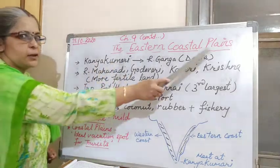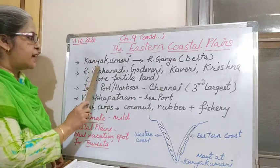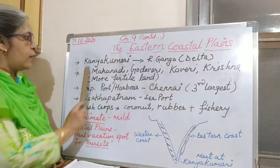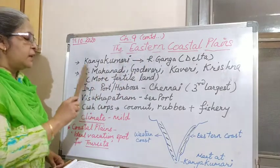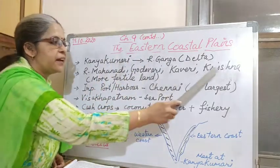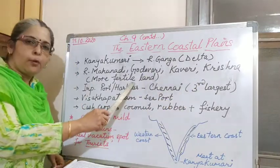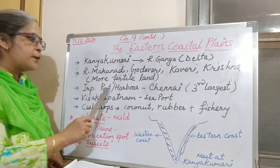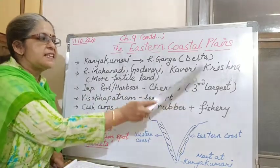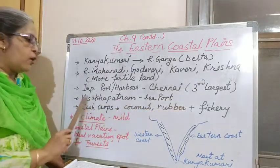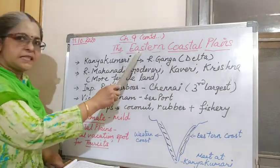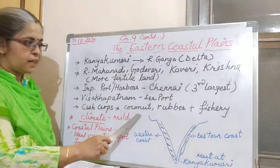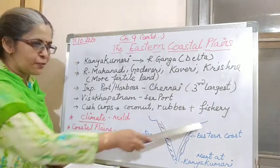The eastern coastal plains stretch from Kanyakumari in Tamil Nadu up to the Ganga delta in West Bengal. The important rivers in the eastern coastal plains — Mahanadi, Godavari, Kaveri, and Krishna — flow there and make the land very fertile. The Mahanadi forms the widest delta. The most important port is Chennai, India's third largest seaport, and Vishakhapatnam is also an important seaport. The main cash crops are coconut and rubber, and fishery is a major occupation.